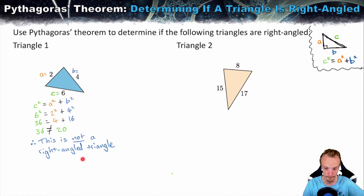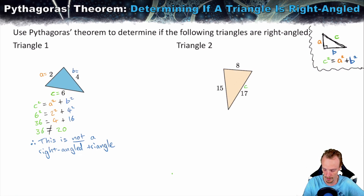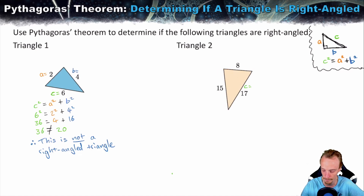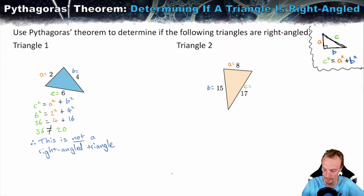Now let's look at triangle 2, where we need to determine whether it's right-angled. First step: label the triangle. C has to be the longest side — the hypotenuse. So C is 17. The triangle may not look right-angled, but we don't know until we check. A is 8 and B is 15. We write out our formula: C squared equals A squared plus B squared.